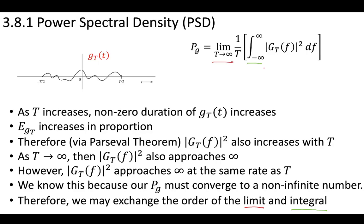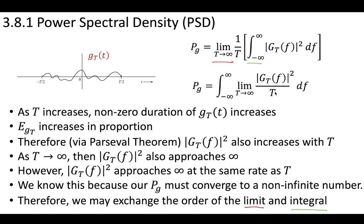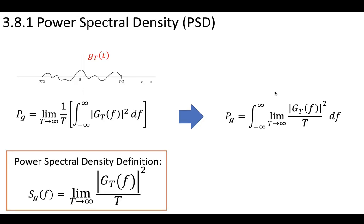We have this limit and the integral, and because they are converging at the same rate, we know that we can exchange the order. The math behind this is a little complicated — you may need to consult a math textbook, but for this series of videos just take my word for it. If you do that and change the order of the limit and integration, we now have the limit on the inside: the limit of this truncated signal in the frequency domain divided by the period, with that whole limit being integrated in the frequency domain. And so we can come up with the power spectral density definition.